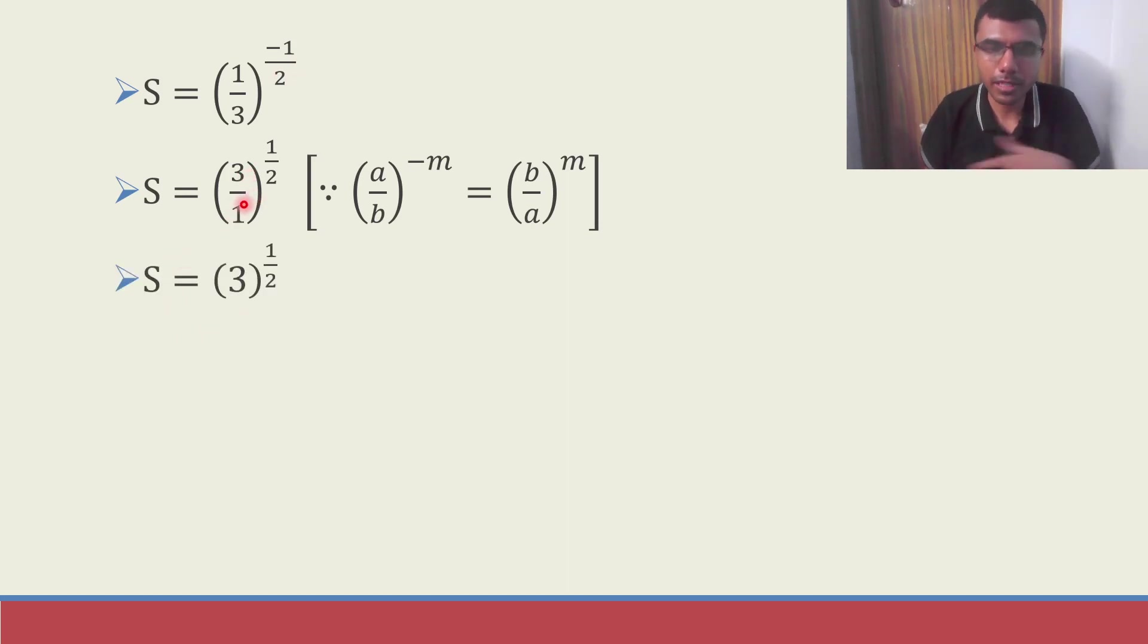So S is 3 by 1 is nothing but 3 so S is nothing but 3 power 1 by 2. And 3 power 1 by 2 is nothing but root 3. That's it. I got my S.